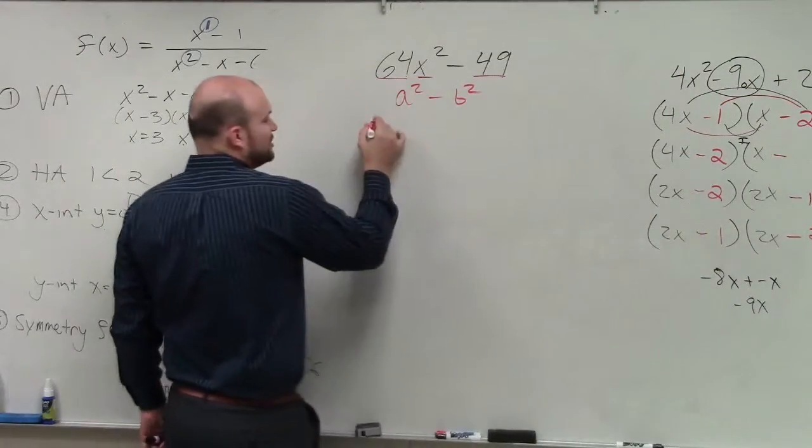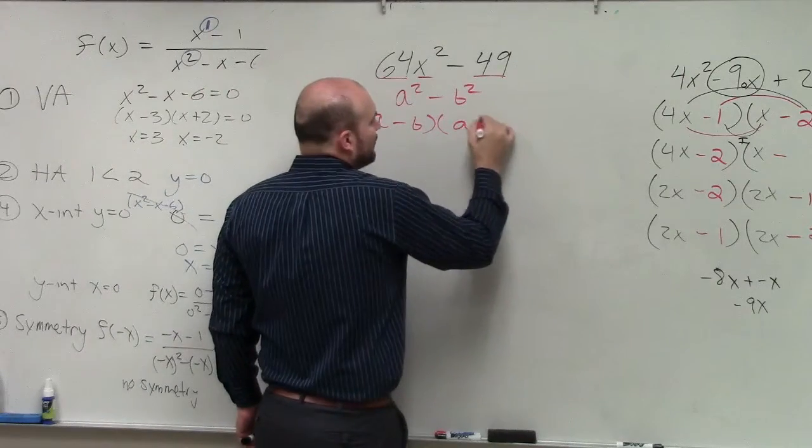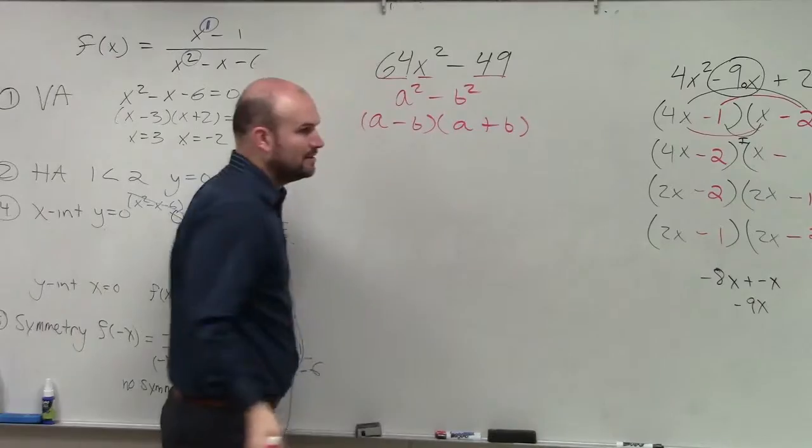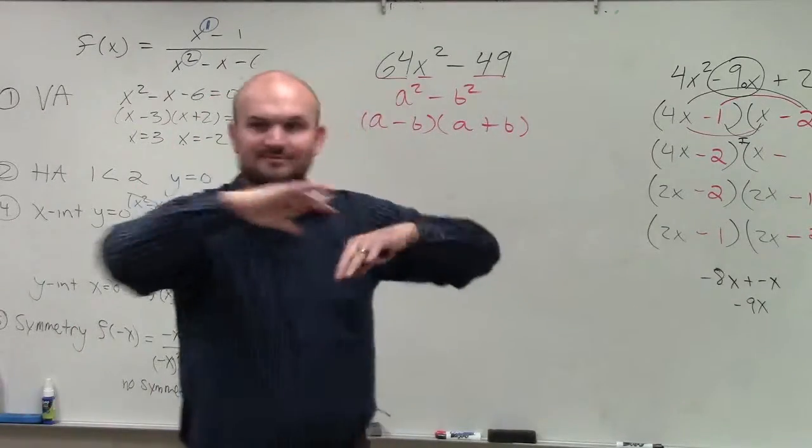Because last class period, I showed you that when you have this, all you need to do for the factored form is a minus b times a plus b. Done. You don't have to do the a times c and box method.